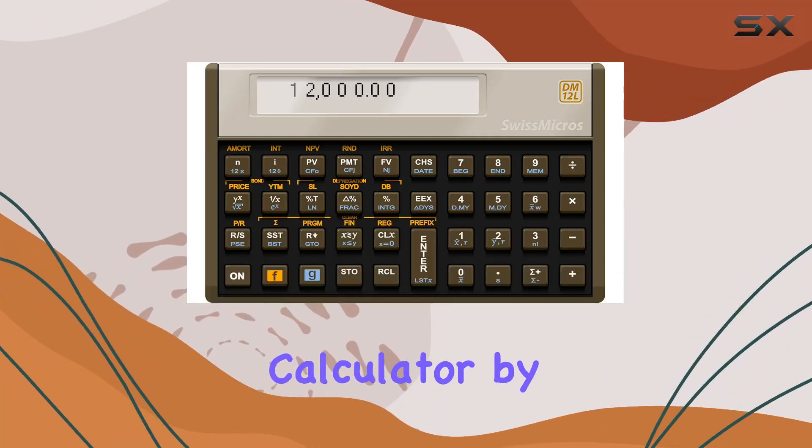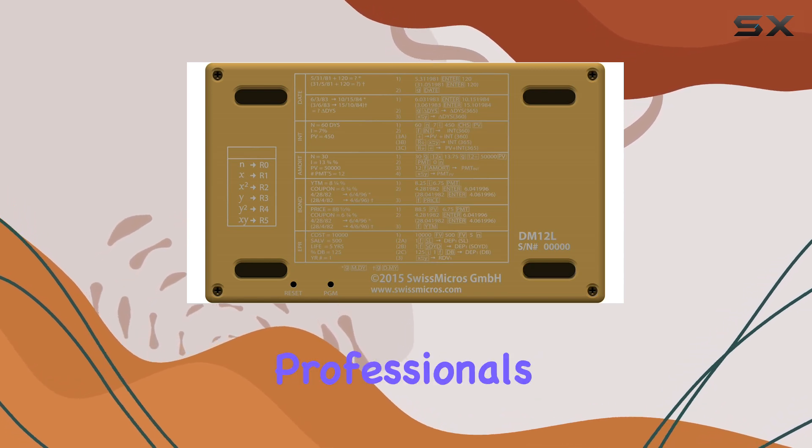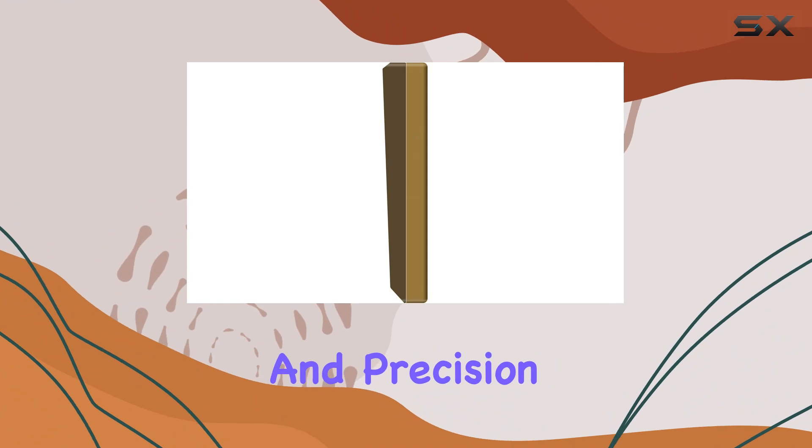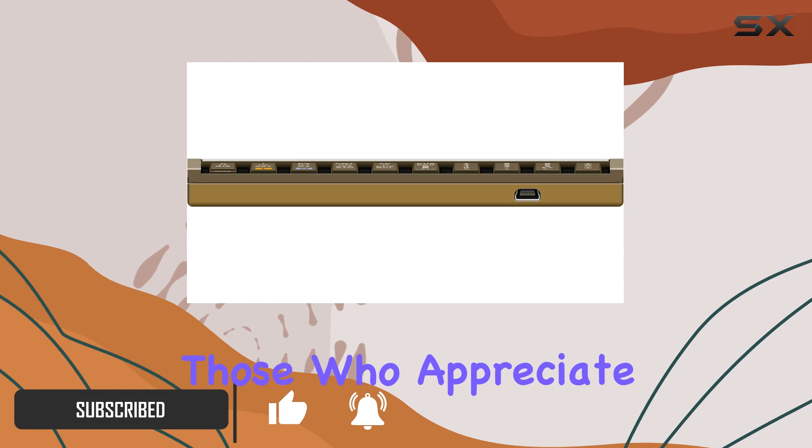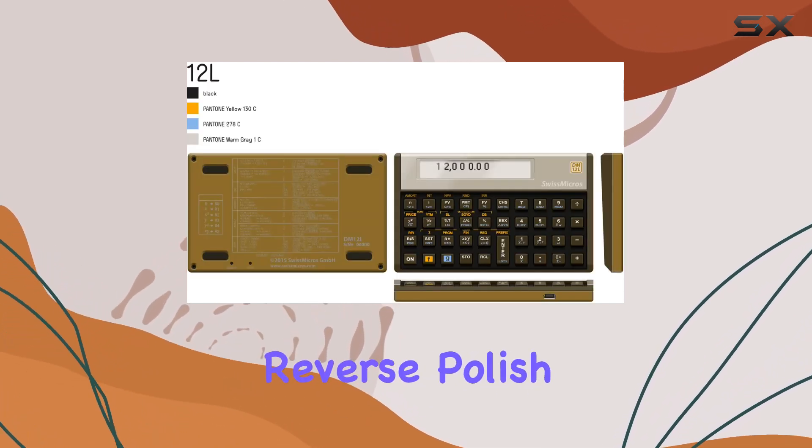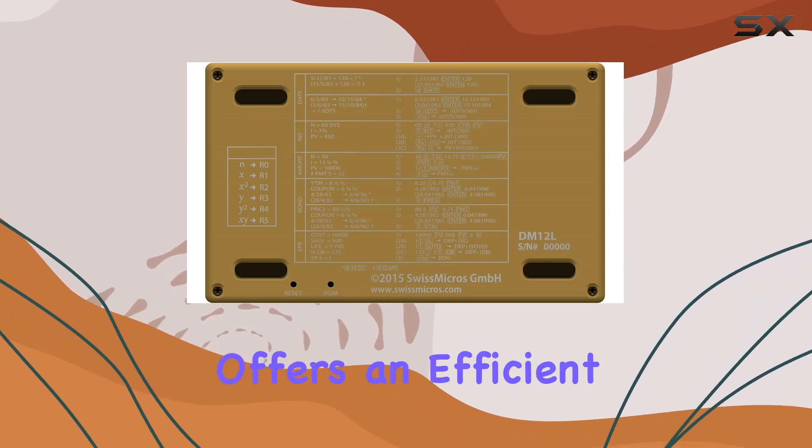The DM12L business calculator by Swiss Micros is a robust and efficient tool designed for financial professionals. This calculator, known for its reliability and precision, is modeled after the iconic HP-12C, making it a favorite among those who appreciate classic design with modern functionality.